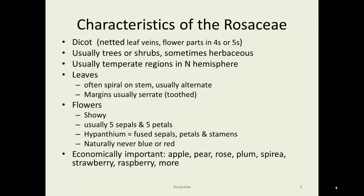They are dicots, so they all have netted leaf venation patterns. The flower parts are in fours or fives. These are usually trees or shrubs, but sometimes they're herbaceous with little or no woody growth. They're usually in the temperate regions in the northern hemisphere. The leaves are often spiral on the stem, but they are usually alternate, and the margins are serrate, which means toothed.